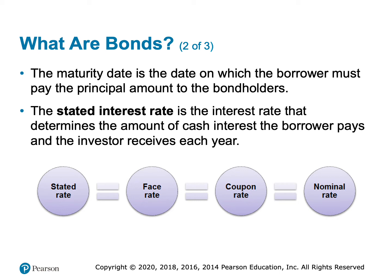The stated interest rate is the interest rate that's stated or written in the contract. You'll sometimes hear it called the contractual rate, the face rate, the coupon rate, or the nominal rate. This is the interest rate that determines how much the interest payments are when we send them to the bondholders. I'm really emphasizing the stated or contractual interest rate because it's the one that determines the amount of the interest payments.